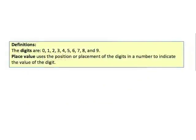Take a look at some definitions. The digits in our number system are 0, 1, 2, 3, 4, 5, 6, 7, 8, and 9. We use just these 10 digits to represent all the numbers in our number system.